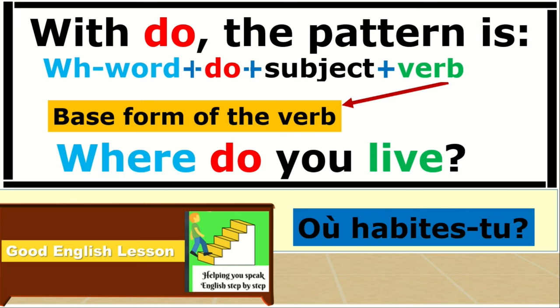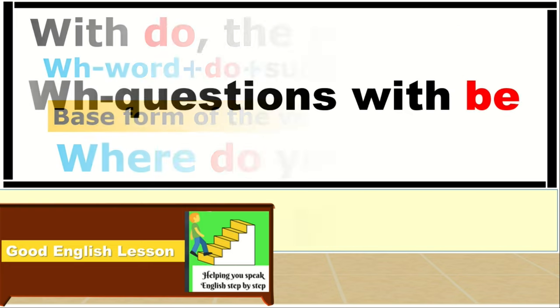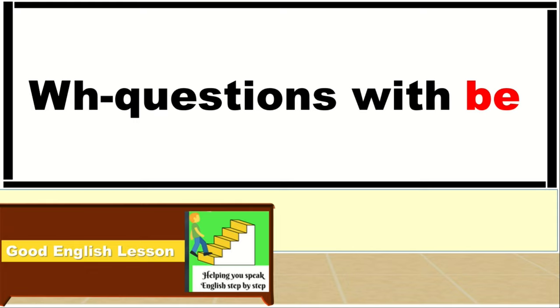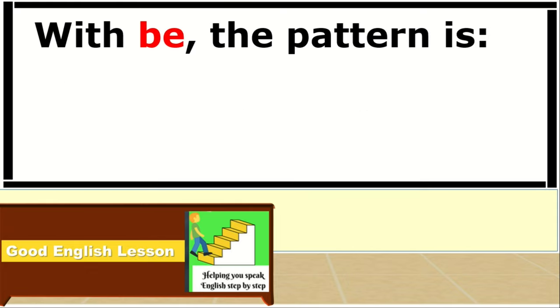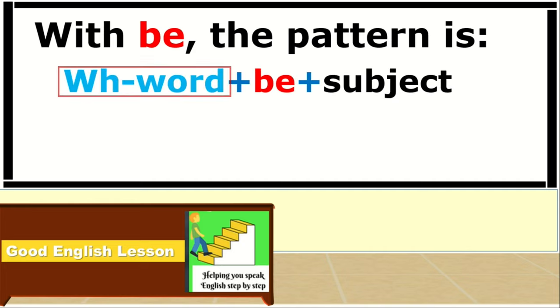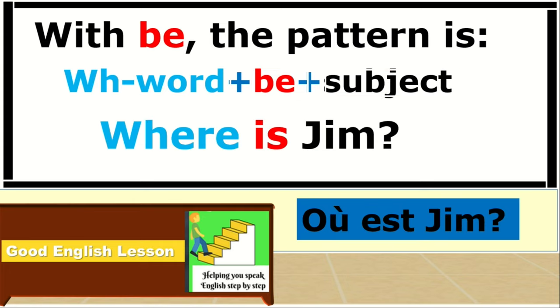For example, wh-questions with BE. With BE, the pattern is: wh-word plus BE plus subject. Where is Jim?